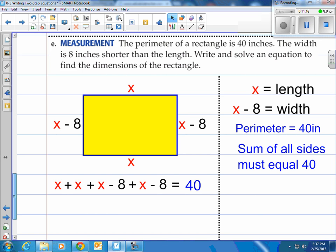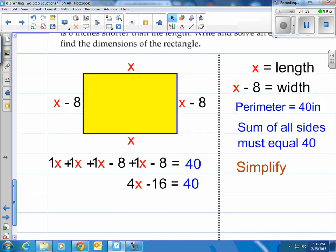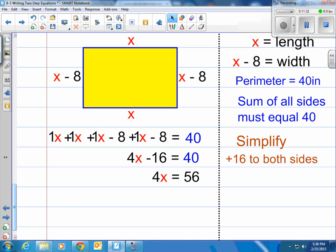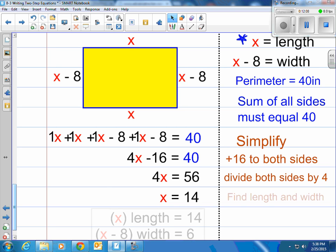Now that I have my long problem, it has to equal 40. All I have to do is simplify. I put ones in front and combine them, and I got 4x minus 16 equals 40. Next step would be adding 16 to both sides. Now you have 4x equals 56. Last step is divide by 4 on both sides. When you divide the left side by 4 you get x, and divide the right side by 4 you get 14. They want you to find both the length and the width. x is the length, so 14 is the length. And of course, 14 minus 8 would be the width. The length is 14 and the width is going to be 6.